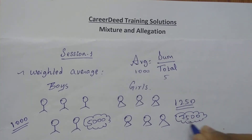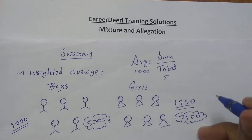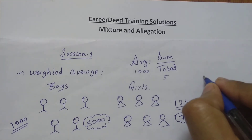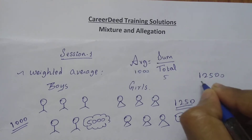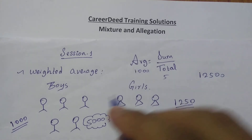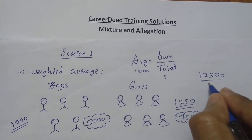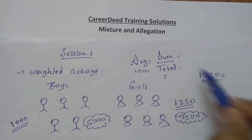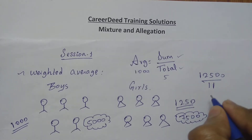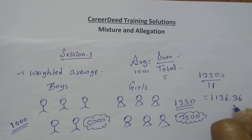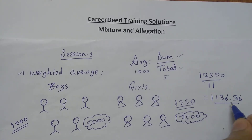Seven thousand five hundred is the total amount spent by the girls on their food. Now to find the average of the entire class, add five thousand plus seven thousand five hundred, which gives twelve thousand five hundred. This is the total amount spent by both boys and girls. Totally five plus six equals eleven people in the class. Dividing twelve thousand five hundred by eleven gives one thousand one hundred and thirty-six point three six rupees as the total average amount spent by the class.